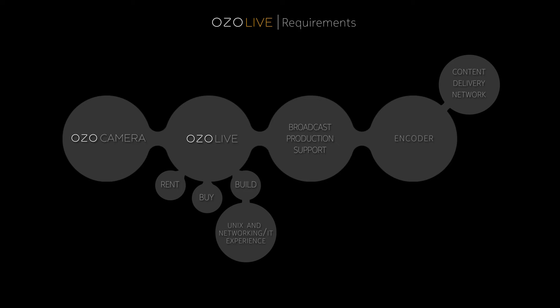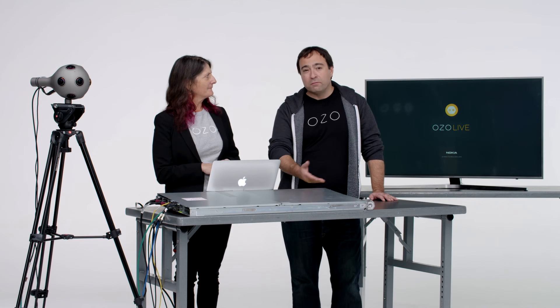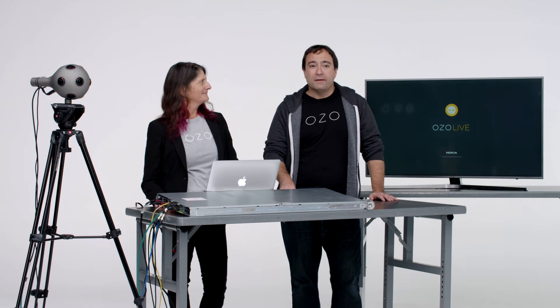If you're going to build it yourself, there are some things you need to know. You need to have some Unix and networking IT experience, and you need to understand that this is part of a pipeline. Surrounding yourself with great broadcast engineers is also a really good idea. To get the signal out, you're going to need an encoder and some kind of content delivery network. All of those aspects, sort of downstream of Ozo Live, are relatively standard broadcast and OTT delivery technologies.